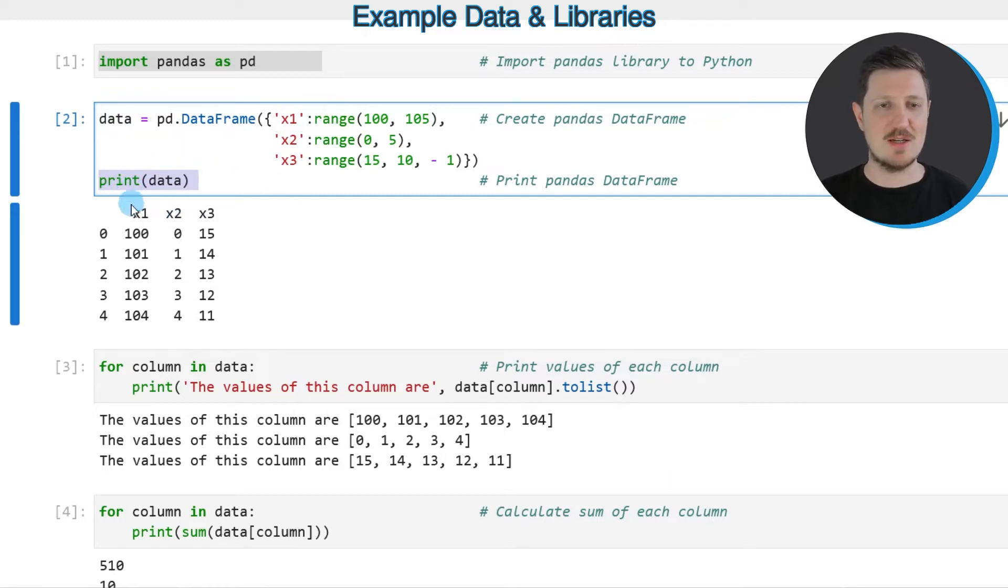After running these lines of code you can see that our example dataframe contains five rows and three columns which are called x1, x2 and x3.